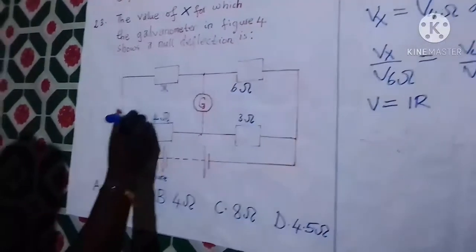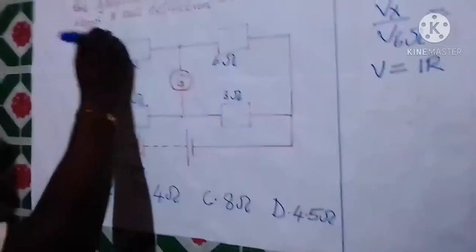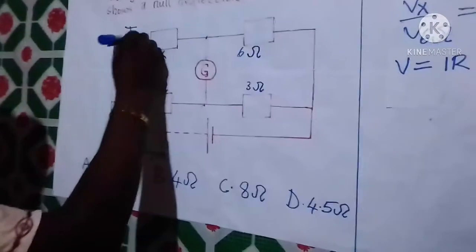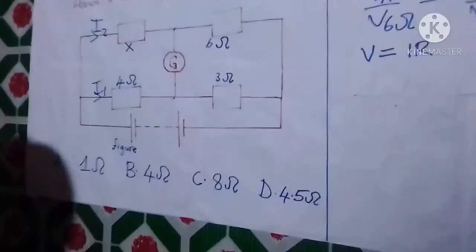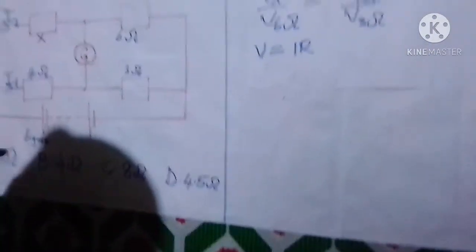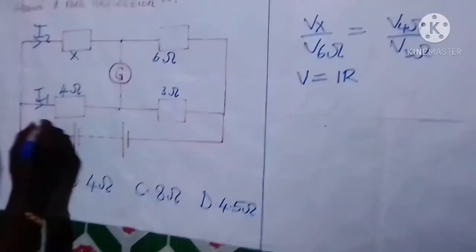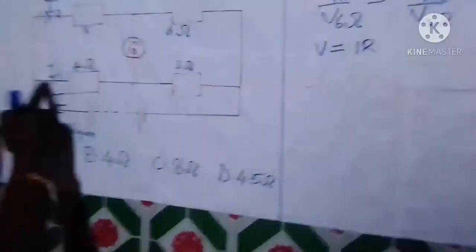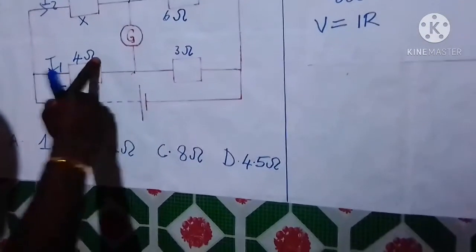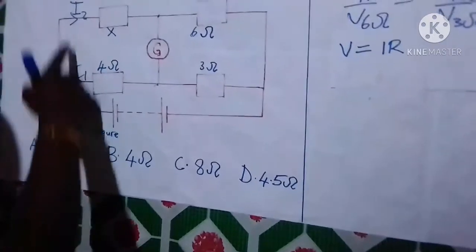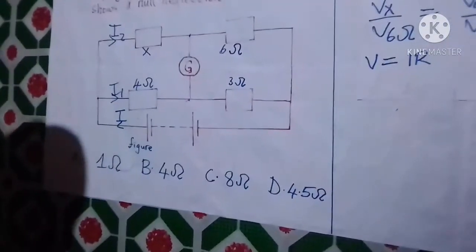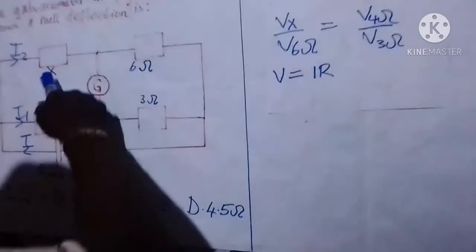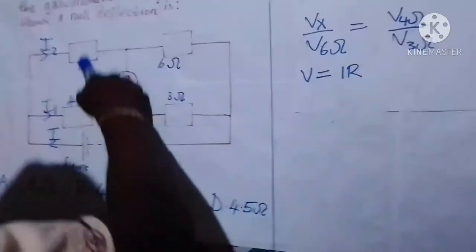The current passing through this one we can call it I1, and the current passing through this we can call it I2, because at this point we are at the junction. The junction rule, the Kirchhoff's law or current at the junction: if we have the current capital I passing through this circuit, then the current passing through this 4 ohms resistor we call it I1, and the current passing through this X ohms resistor we call it I2.